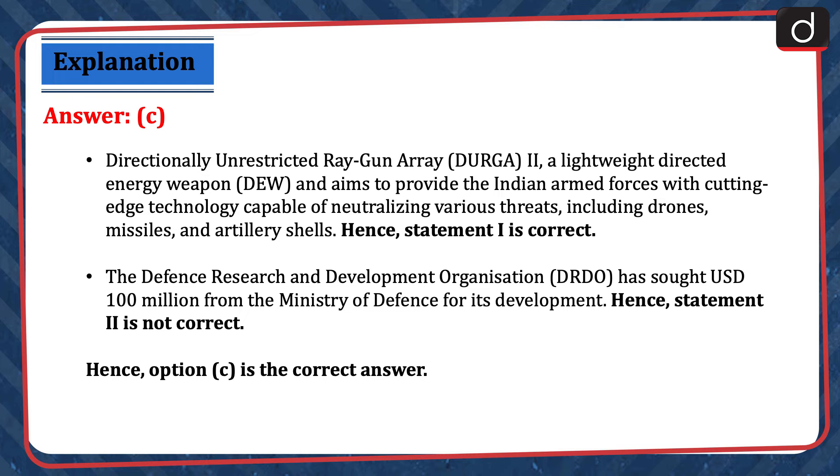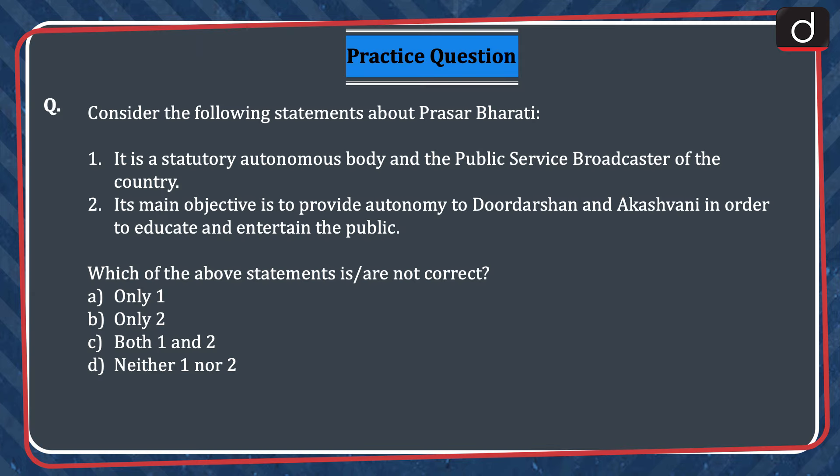Now it's time for the practice question. Consider the following statements about Prasar Bharati. (1) It is a statutory autonomous body and the public service broadcaster of the country. (2) Its main objective is to provide autonomy to Doordarshan and Akashvani in order to educate and entertain the public. Which of the above statements is or are NOT correct? Options: (A) only one, (B) only two, (C) both one and two, or (D) neither one nor two. Send the answer in the comment section. Stay tuned for the next episode. Thanks for watching.